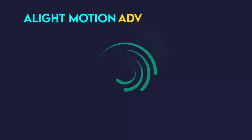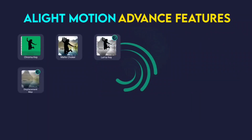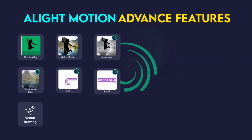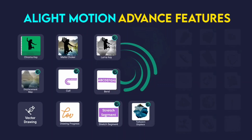Alight Motion has advanced features including: Chroma Key, Matte Choker, Luma Key, Displacement Map, Curl, Bend, Vector Drawing, Drawing Process, Stretch Segment, Turbulence Displace, and 3D objects.